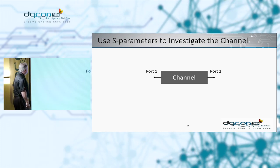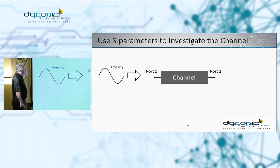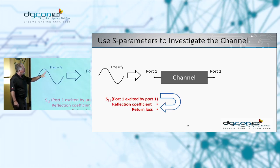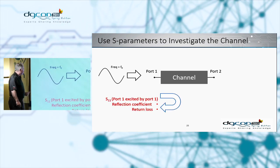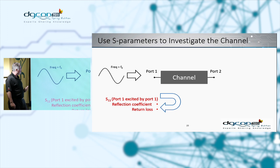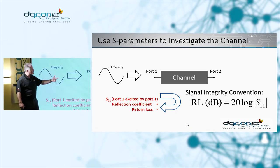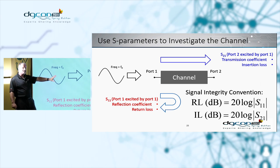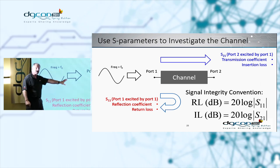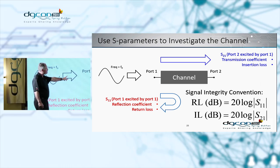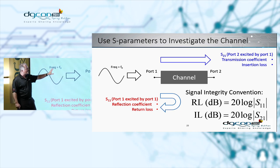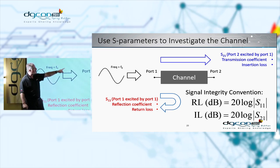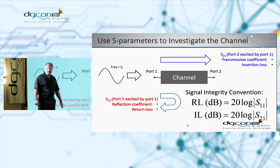Let's investigate the S-parameters. A very precise sine wave generated by the VNA goes into port one. What comes back is return loss; what transmits through is insertion loss. By convention: the first index is the output port, the second is the input. S21 — one is the input, two is the output.